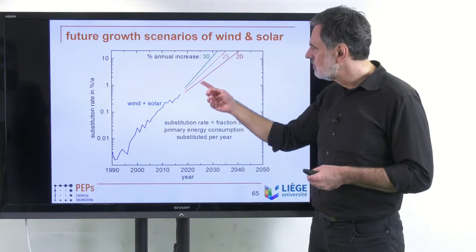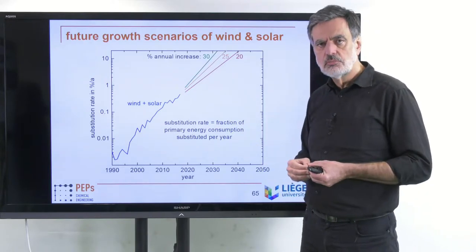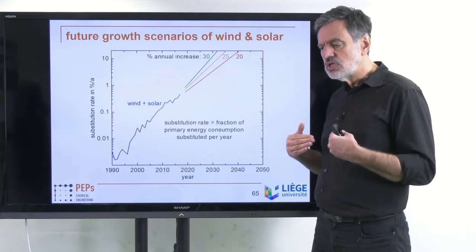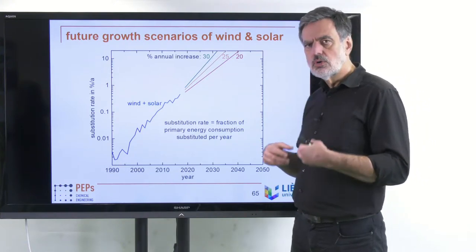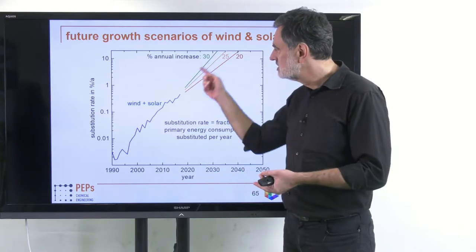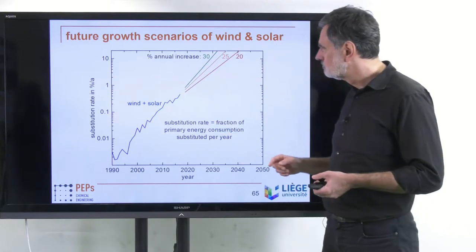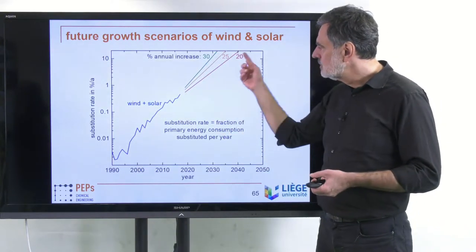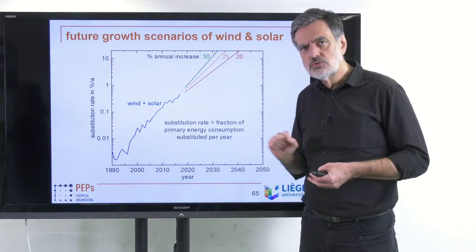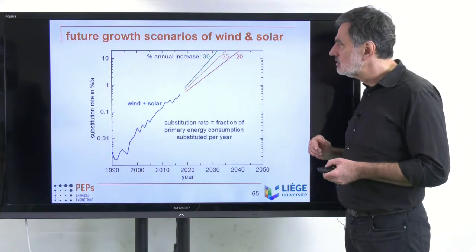A growth rate of 20% — the current value — means maintaining today's level without the decrease we've observed over the last couple of years. A 30% growth rate, which we did reach in the past, would mean increasing our effort for the sustainable energy transition by a factor of 1.5 compared to today — significantly more effort put into this energy transition.